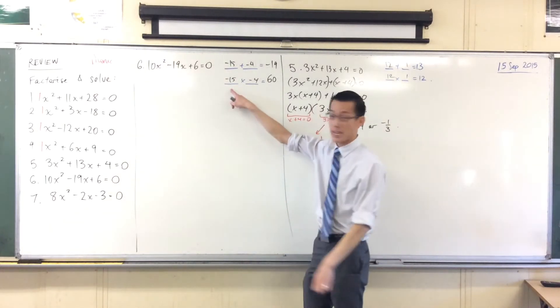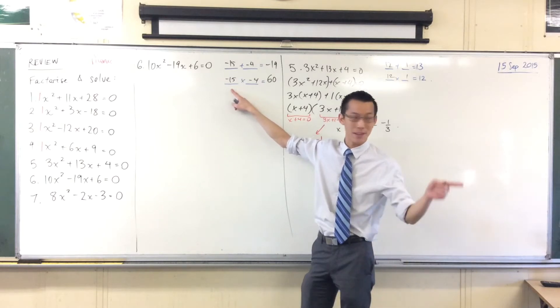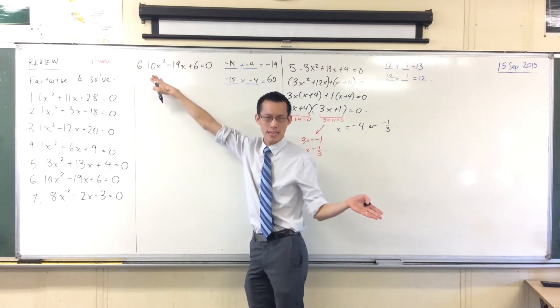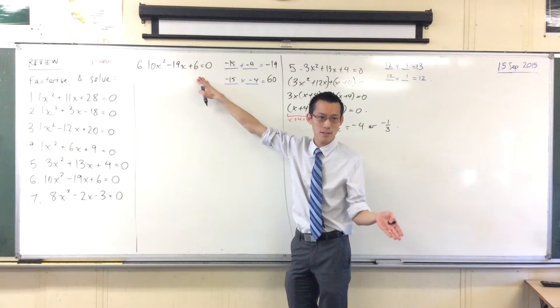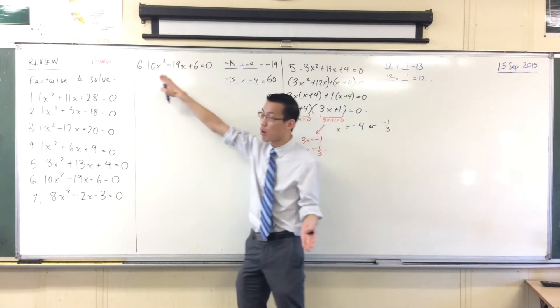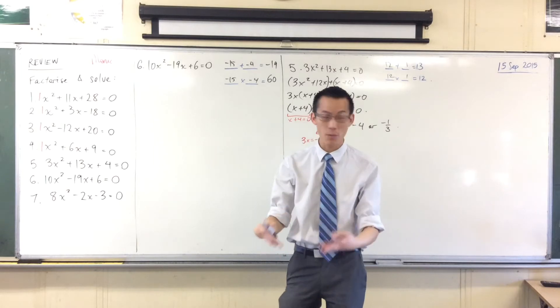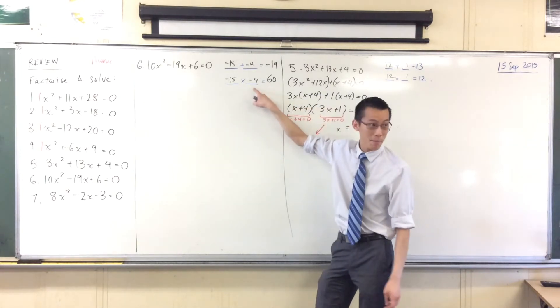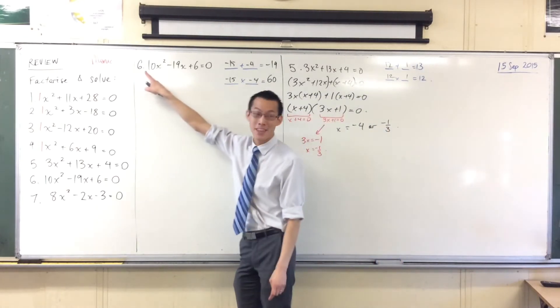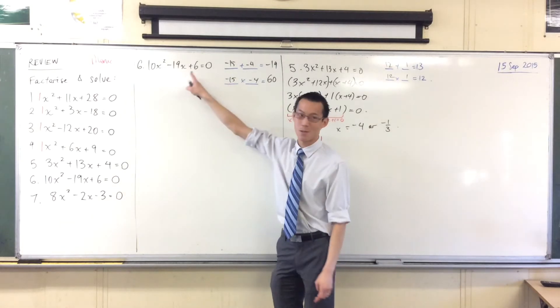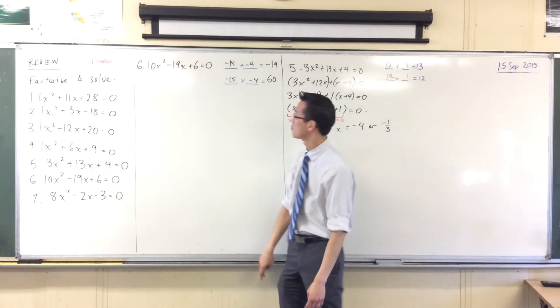What do you guys reckon? Do you think, for example, the 15, the minus 15x, rather, bless you, do you think it should go with the 10x squared or with the 6? I reckon probably with the 10x squared, right? An easy, it doesn't always work, but an easy way to notice is that if you've got a big number and a small number, usually the big number will go with the big one, and the small one will go with the small one, usually.